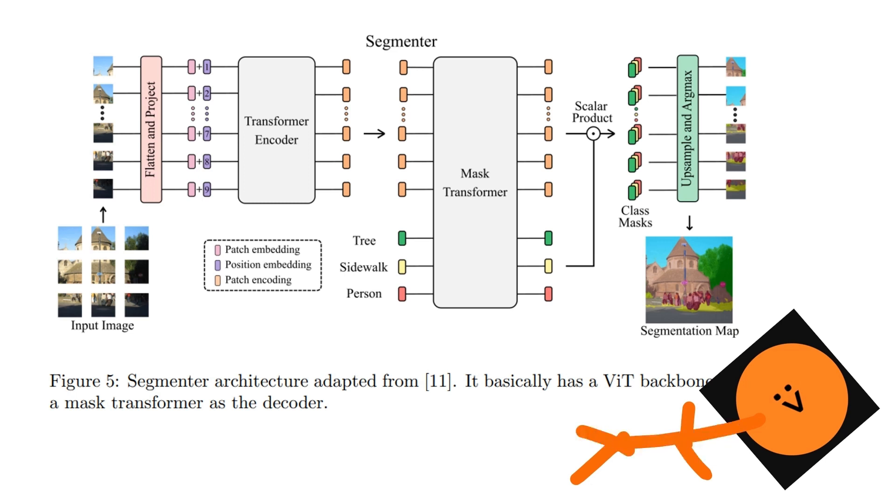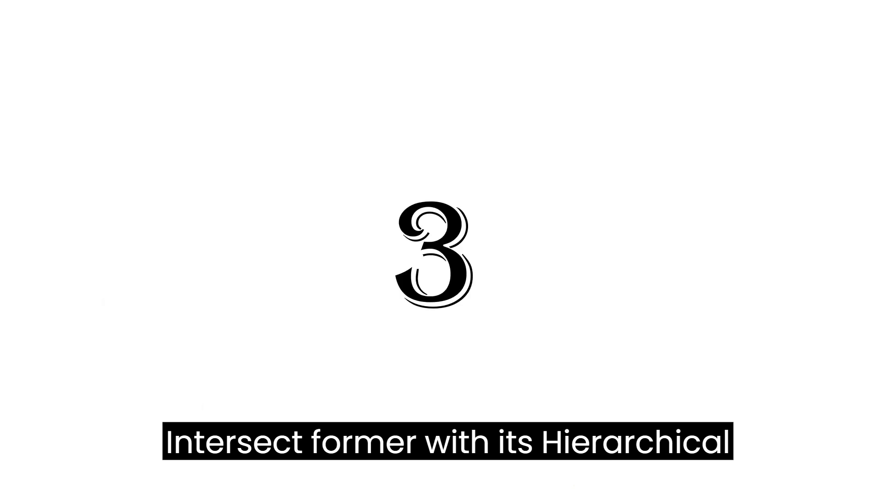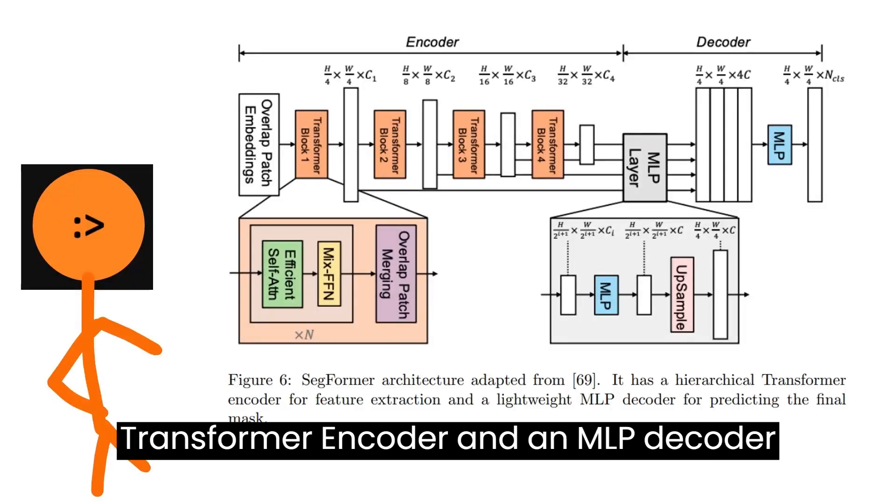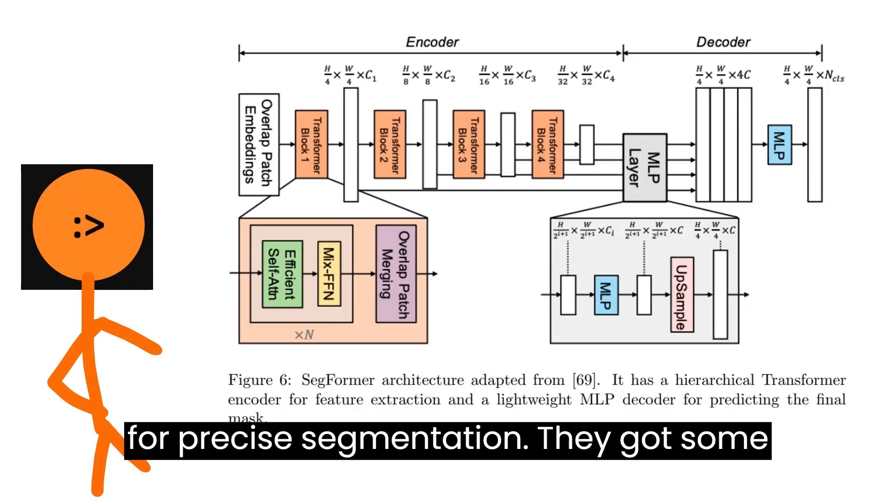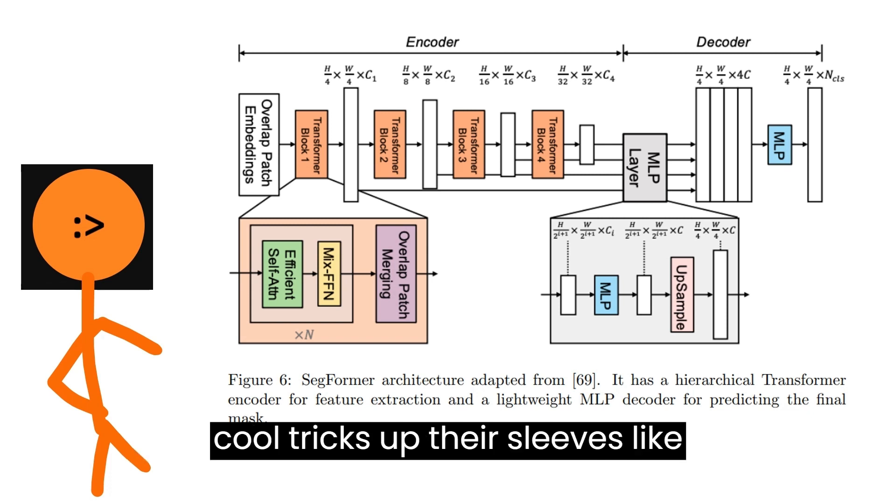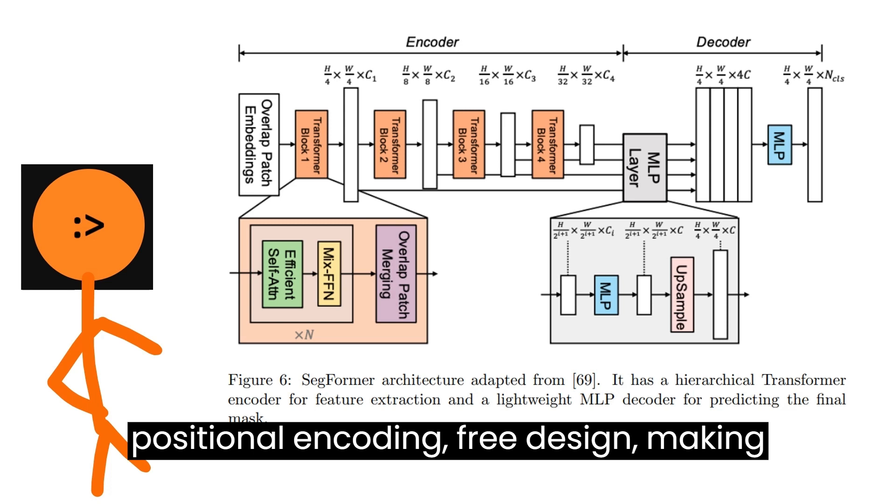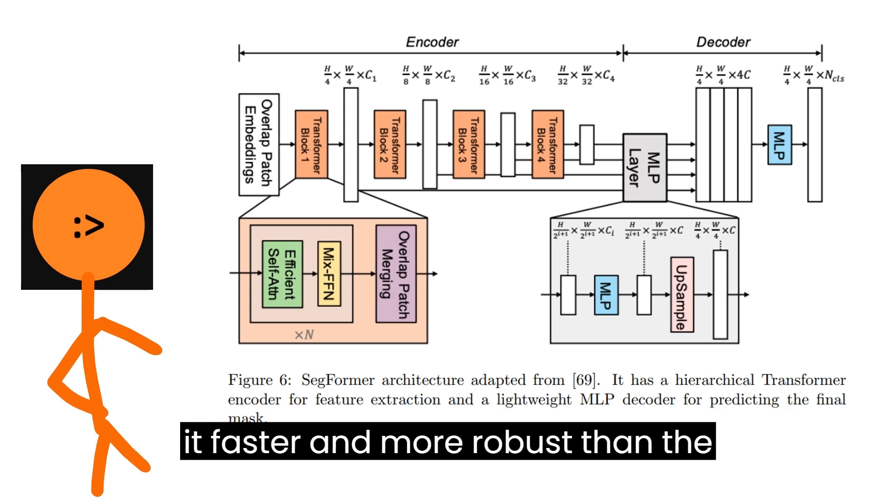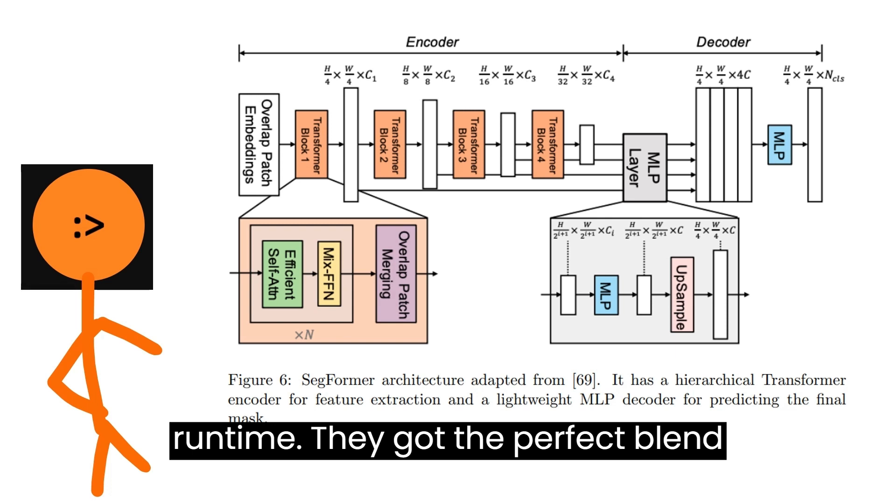Number three, enter SegFormer with its hierarchical transformer encoder and an MLP decoder for precise segmentation. They got some cool tricks up their sleeves, like position-able encoding-free design, making it faster and more robust than the competition. Size, accuracy, and runtime - they got the perfect blend.